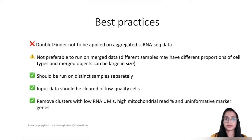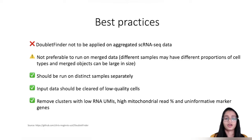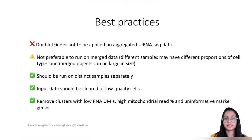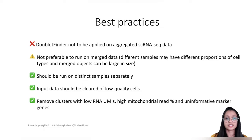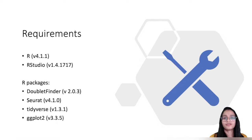Before demonstrating DoubletFinder, here are some best practices. DoubletFinder cannot be applied to aggregated or integrated data — it should be run as a QC step. It's also not preferable to run on merged data, as different samples may contain different proportions of cells, and merged objects can be large and computationally intensive. DoubletFinder should be applied to each sample individually, after the input data has been cleared of low quality cells and clusters with low RNA UMIs, high mitochondrial read percentages, or uninformative marker genes.